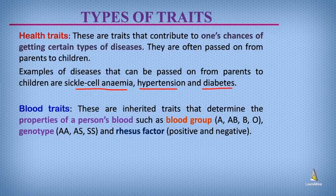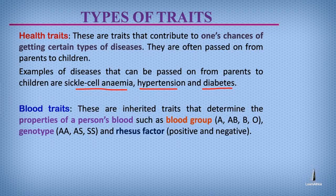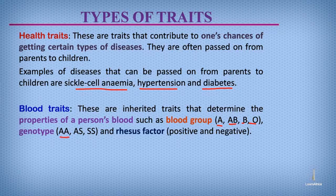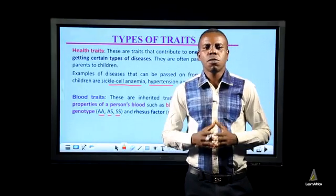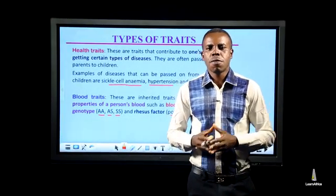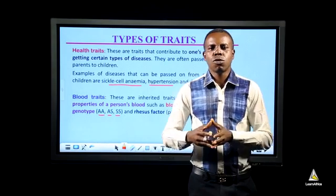Blood traits are traits that determine the properties of one's blood. These properties include blood group, which may be blood group A, AB, B, or O. They can also determine one's genotype, which may be AA, AS, or SS. Also, they can determine the rhesus factor, which might be positive or negative.